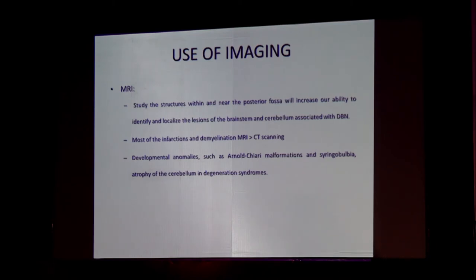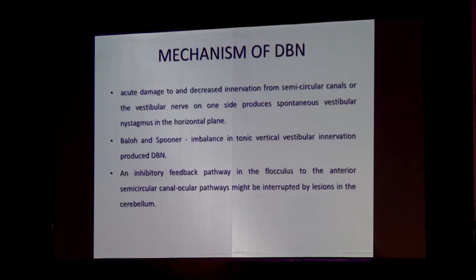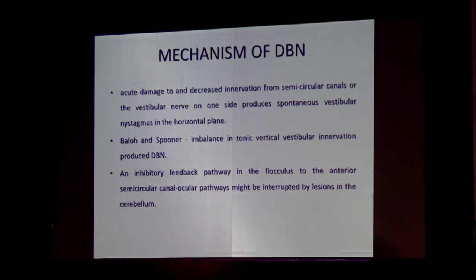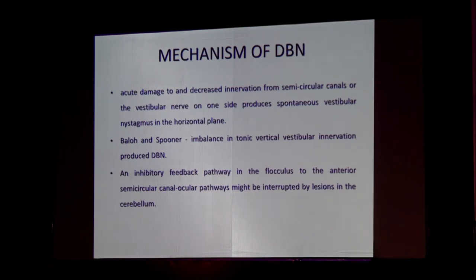Regarding the mechanism of downbeat nystagmus: it is basically an imbalance in tonic vestibular innervation. The vestibular nucleus is a deep nucleus of the cerebellum, so practically any cerebellar disease would remove the inhibitory factor on the deep vestibular nuclei, leaving anterior canal innervation practically uninhibited, causing an upward eye movement and compensatory downbeating nystagmus.